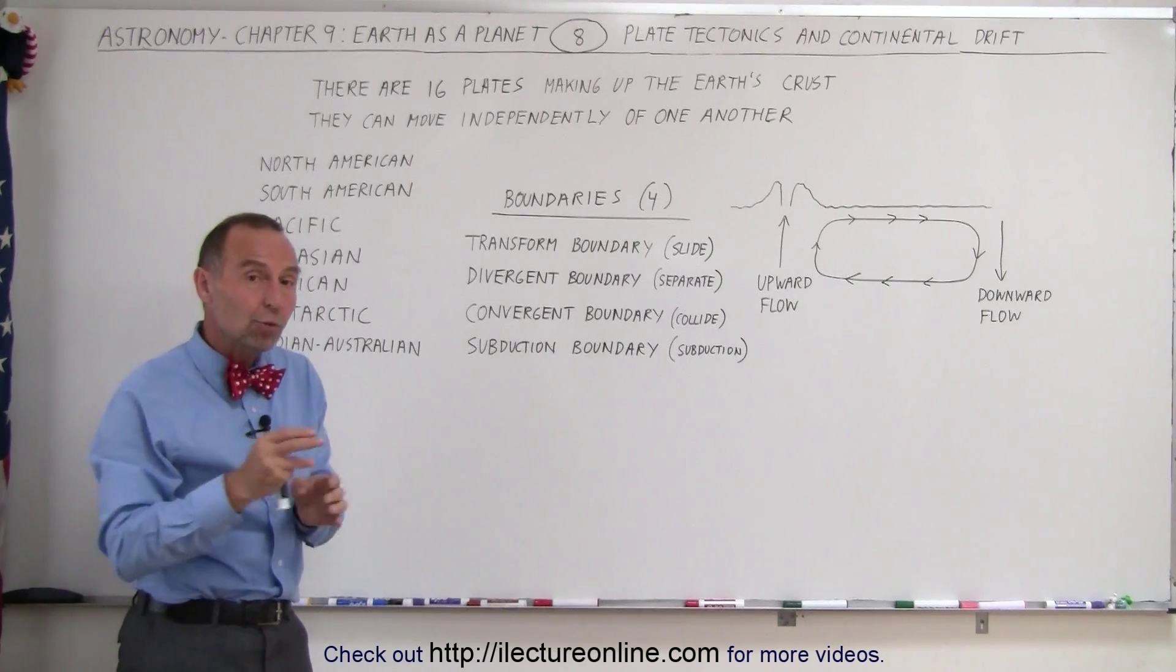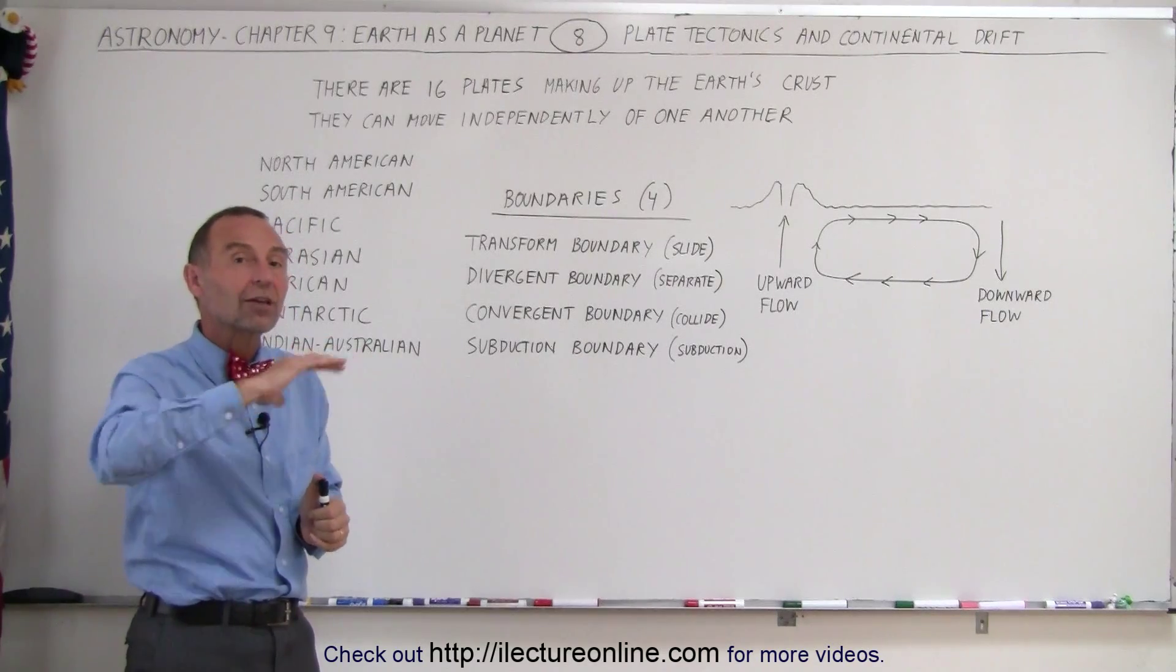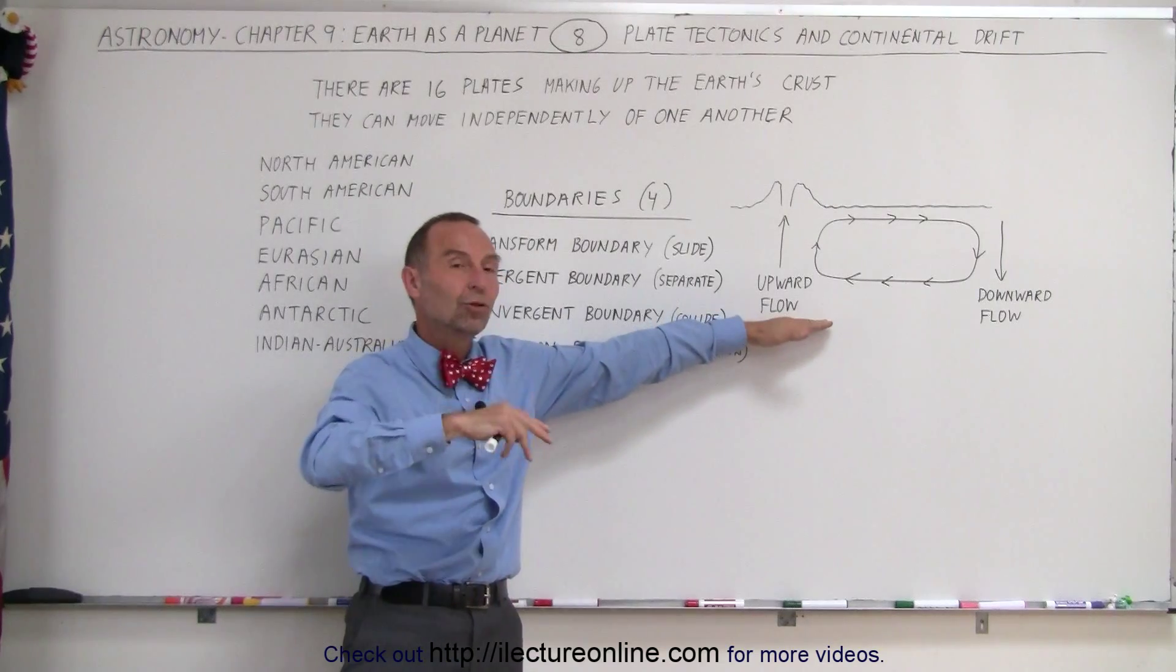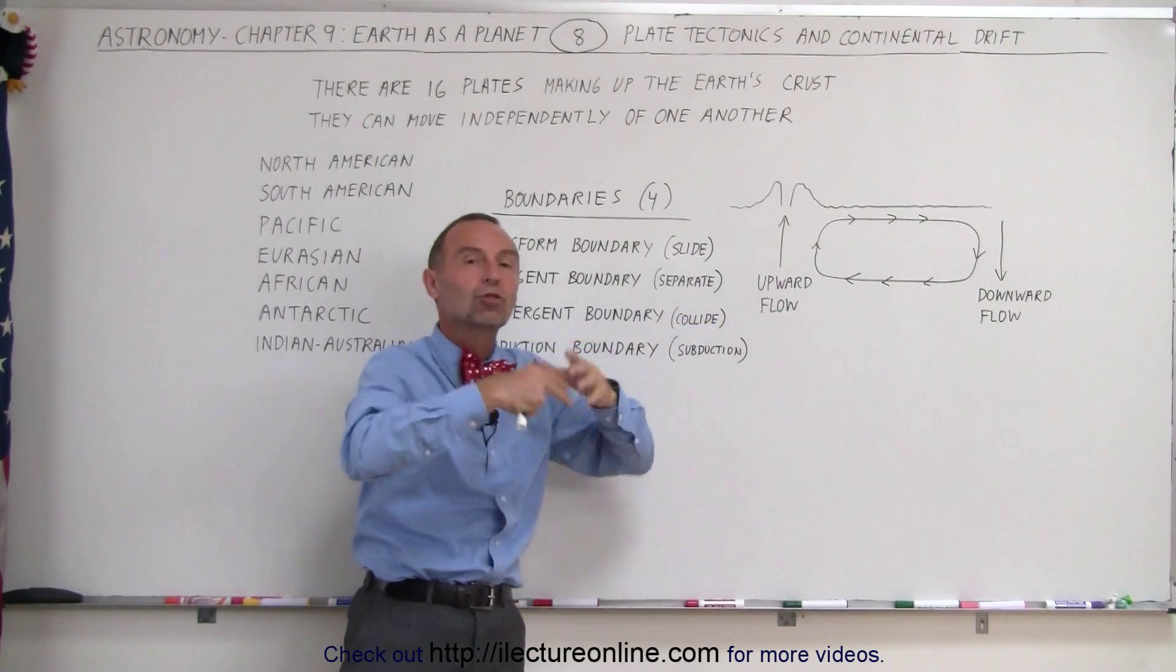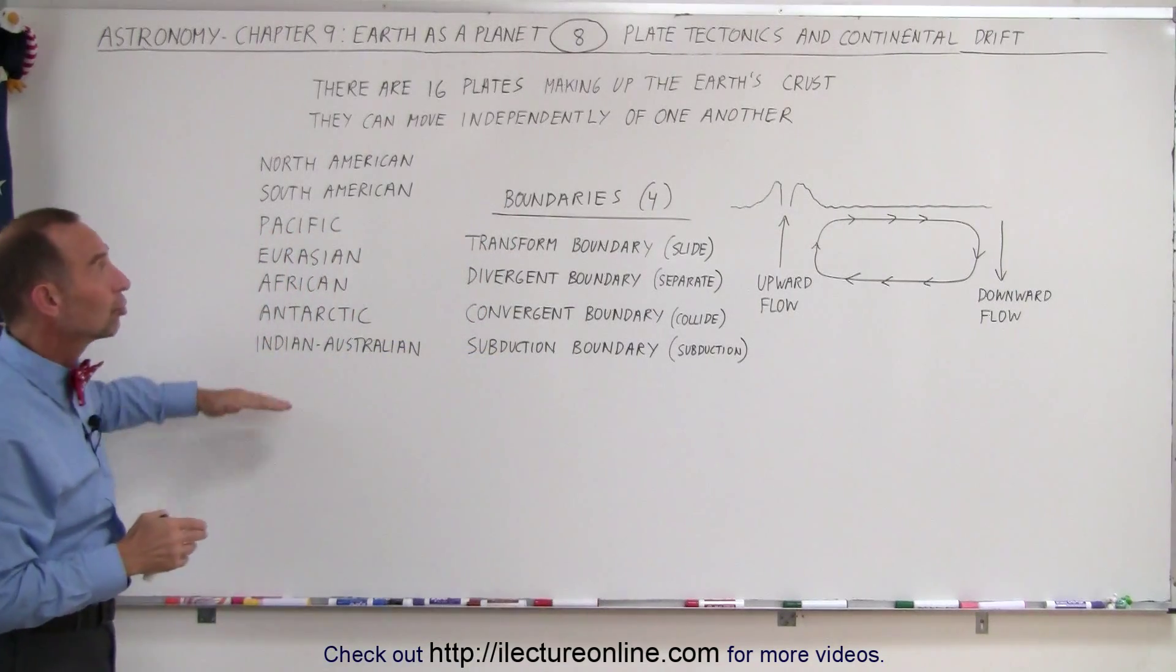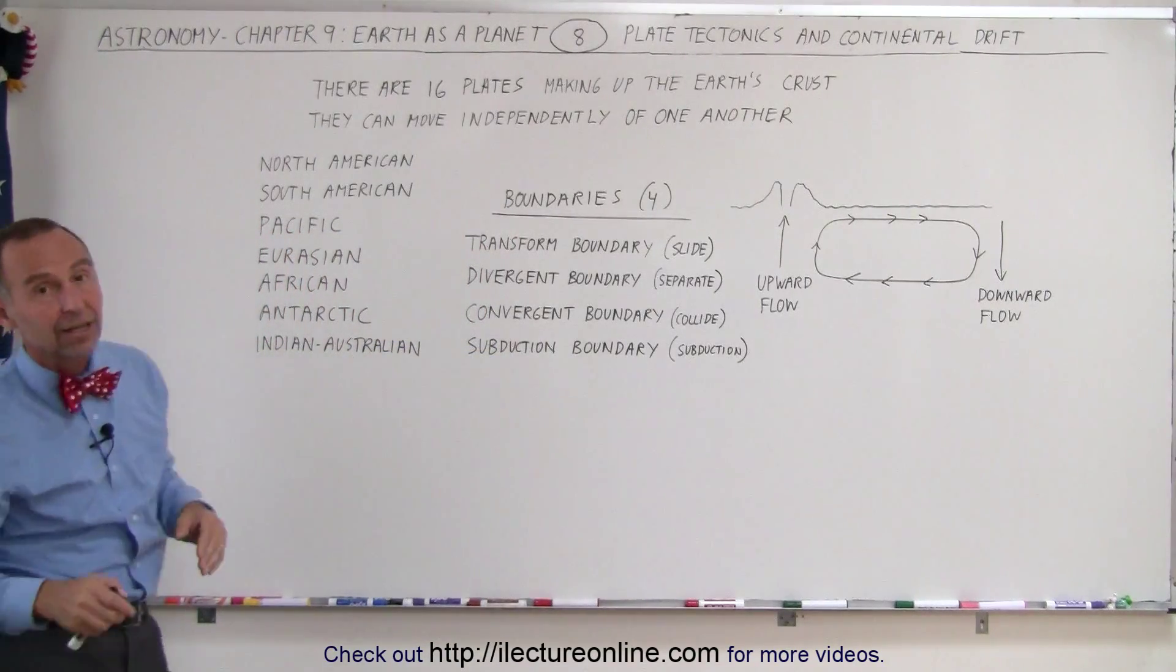Planets and moons that still have surface features that are constantly changing is mostly because they have an atmosphere and there's enough interior heat for motion to exist on the surface. That's what sets everything in motion. That's why we have plate tectonics.